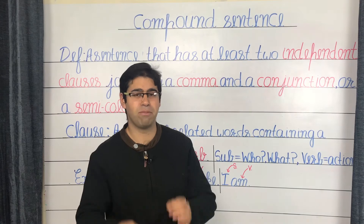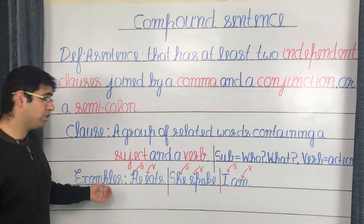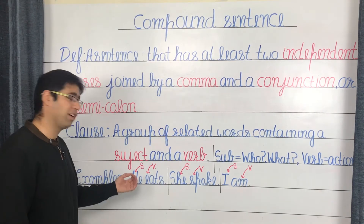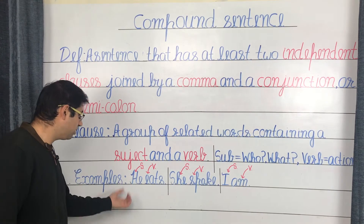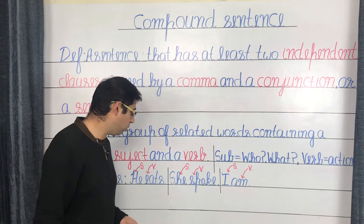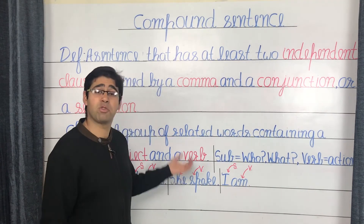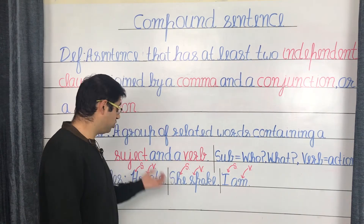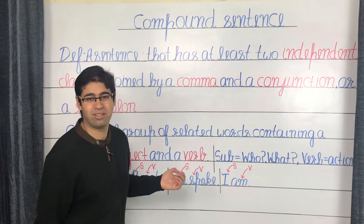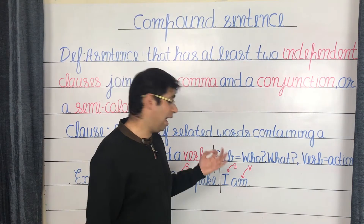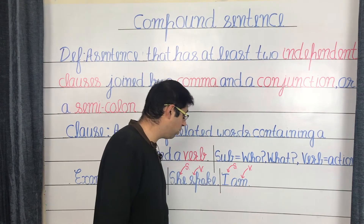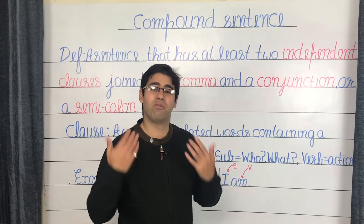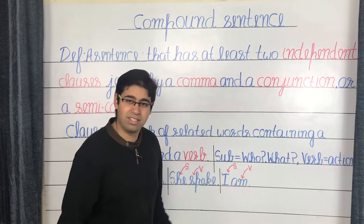Let's understand this with some examples of basic clauses. The first is 'he eats' — the action being performed is to eat, which becomes the verb, and he is the subject. Another simple clause: 'she spoke' — spoke is the verb and she is the subject. Finally, even two simple words put together like 'I am' serve as a clause, because I is the subject and am is the verb of existence, making 'I am' another perfect example of a clause.